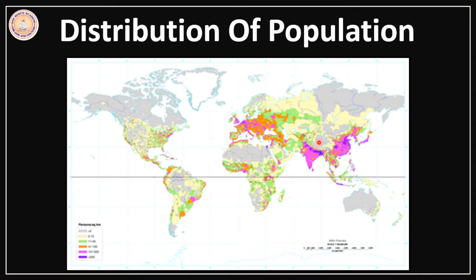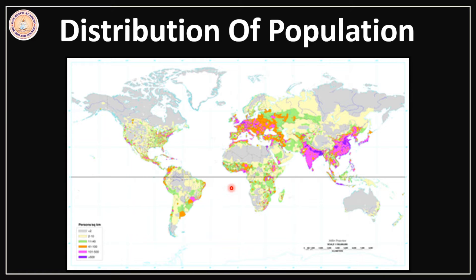So as you look at this map and see the different colours, you can understand that countries like India, China, some parts of Europe, the concentration of population is very high. Here also in the northeastern part of USA, we find that concentration is pretty high.